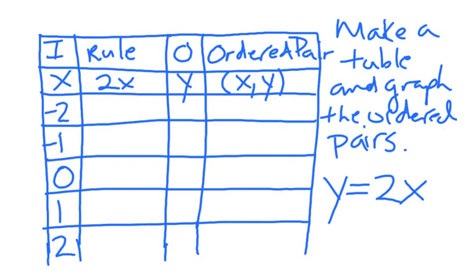Sometimes, an input-output table will have an extra column at the end that says ordered pair. And the directions usually change. These directions say make a table and graph the ordered pairs. So, sometimes there's an extra column to fill in. It's real easy.